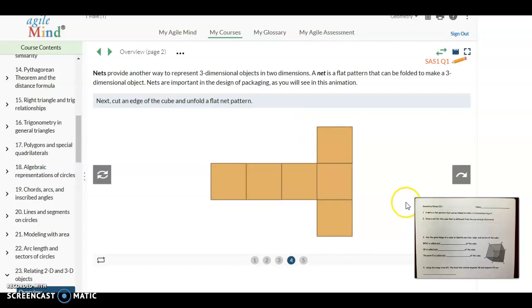So when you look at the net you can see how many faces made up that prism. We had one, two, three, four, five, six square faces that came together to make that cube.